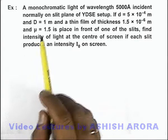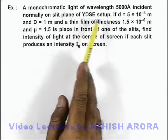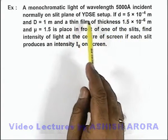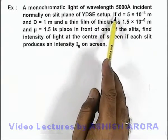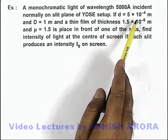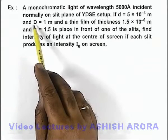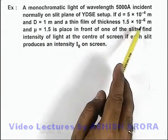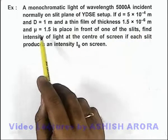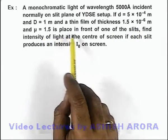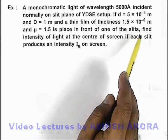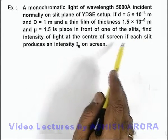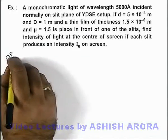In this example, we are given that a monochromatic light of wavelength 5000 angstrom is incident normally on a slit plane of a YDSE setup. The slit separation is given, and the separation between slit and screen is 1 meter. A thin film of thickness 1.5 micrometer and refractive index 1.5 is placed in front of one of the slits. We are required to find the intensity of light at the center of the screen if each slit produces an intensity I₀ on the screen.